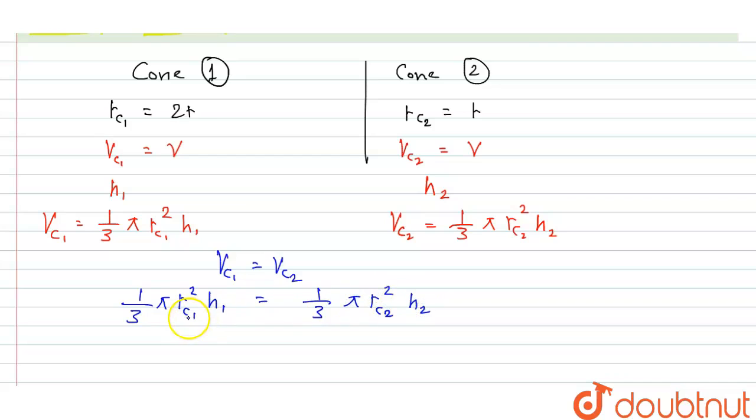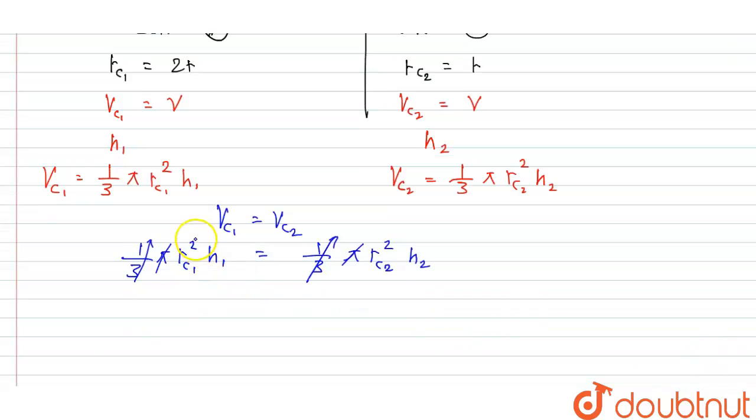Since RC1 equals 2R, we can cancel π and 1/3 from both sides. RC1 squared equals (2R)² which is 4R² times h1, and RC2 squared equals R² times h2. Now solve it.